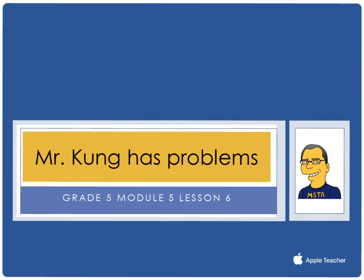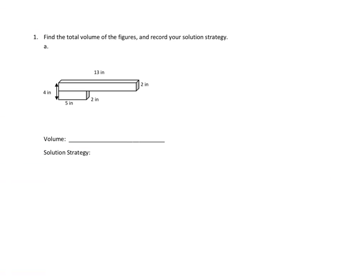Hello, and welcome to another episode of Mr. Kong Has Problems. Tonight in grade five, module five, we are working on lesson number six, and that means we are finding the total volume of solid figures which are composed of two non-overlapping rectangular prisms. In other words, we're looking for the volumes of shapes that are made up of more than one shape. So let's take a look at a couple problems from tonight's homework.